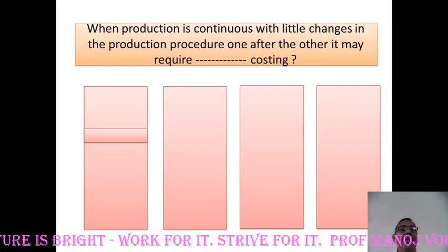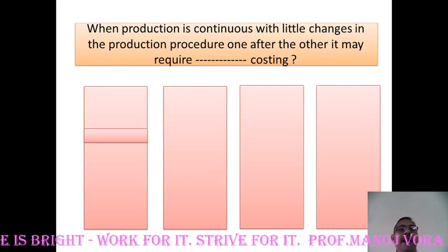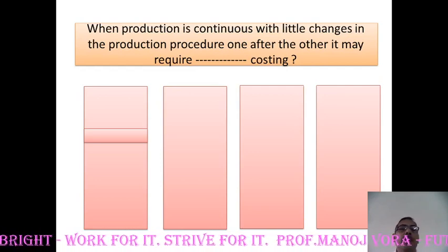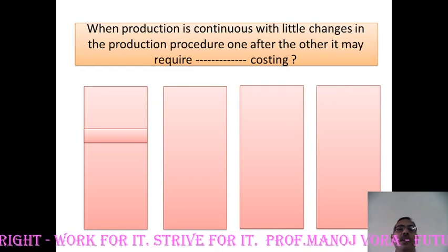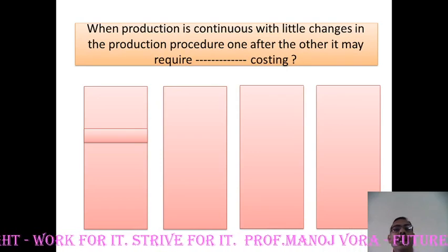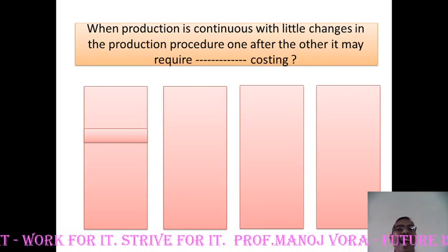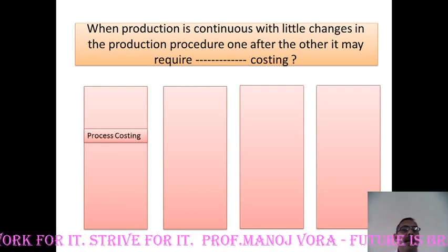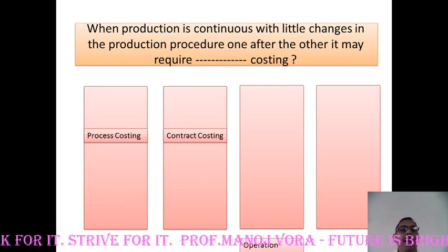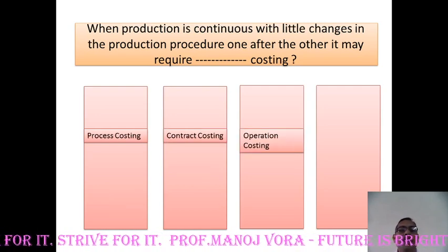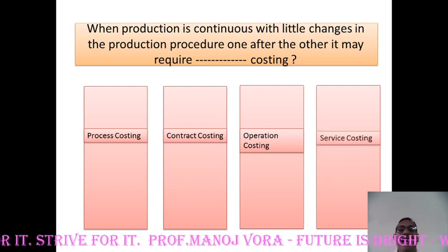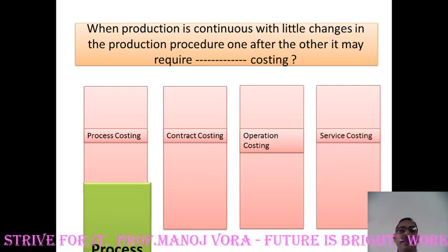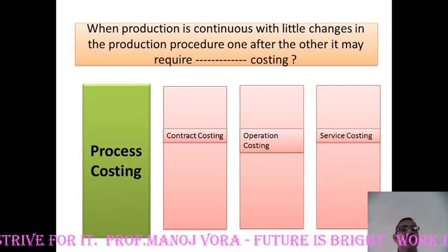Your next question: when production is continuous with little changes in the production procedure one after the other, it may require dash costing. Your options are process costing, contract costing, operation costing, and service costing. Your right answer is process costing.